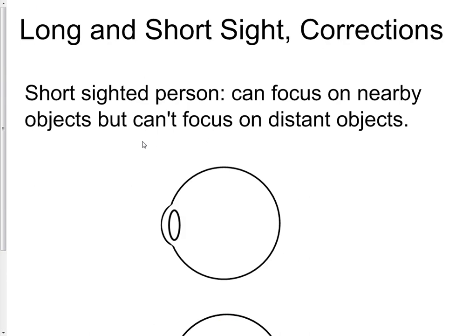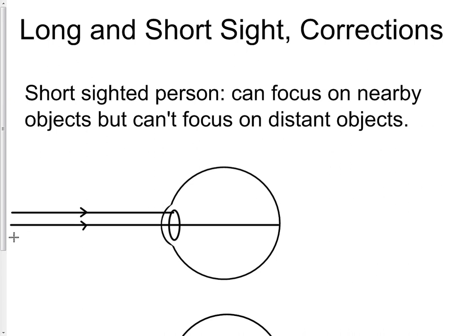For short sight — a short-sighted person can focus on nearby objects but can't focus on distant objects. Rays from a distant object are pretty much parallel by the time they hit the eye. You need to be absolutely sure what a question is asking, because if you start it off wrong you'll never get the rest of the diagram right. The problem with a short-sighted person is that these parallel rays get brought to a focus somewhere before they hit the retina, so by the time they hit the retina they're no longer tightly focused and the image is blurry.